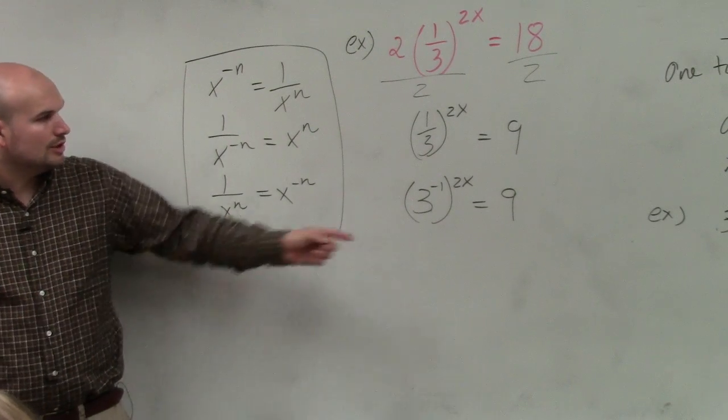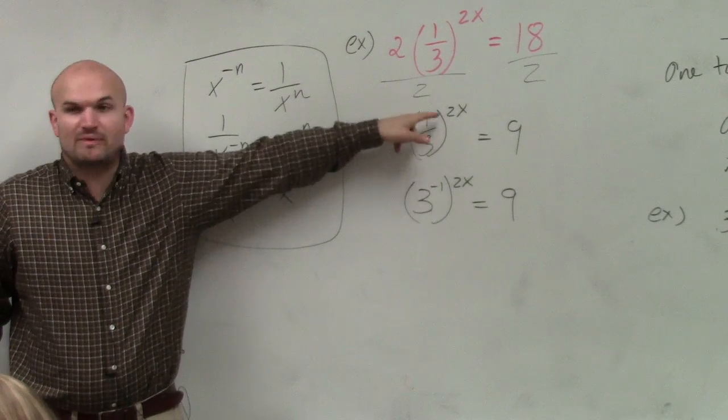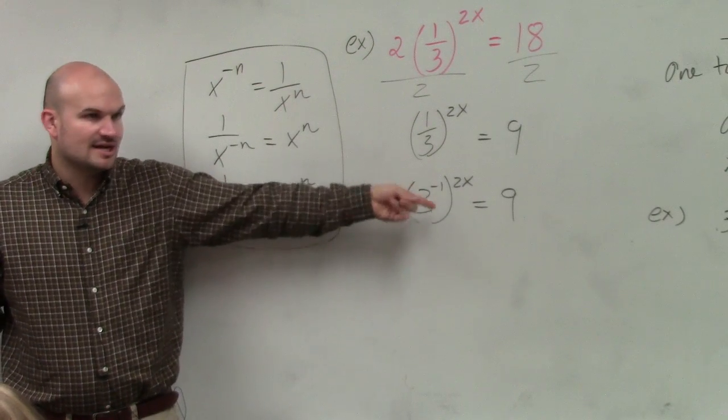Oh, I see. The only way to rewrite this—you can't multiply it by its reciprocal because it's raised to a power. So you just have to rewrite the 1/3 as 3 to the negative first.